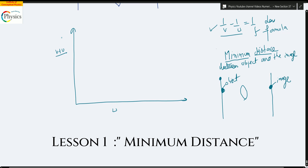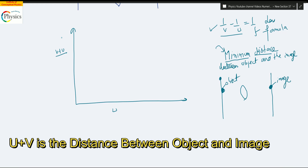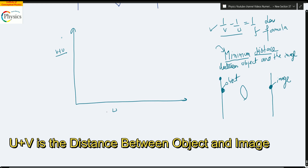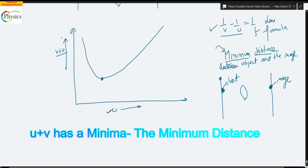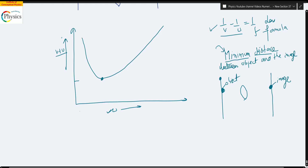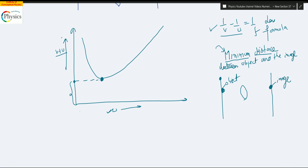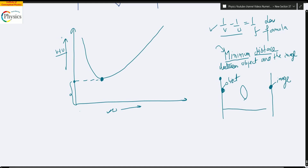We are studying this concept because it will help you understand this question. The concept of minimum distance: if you keep changing the position of the object and measure the minimum distance, you find a graph with a minima. The minimum distance between object and image occurs at this minima point. This minimum distance comes out to be v plus u equals 4f.